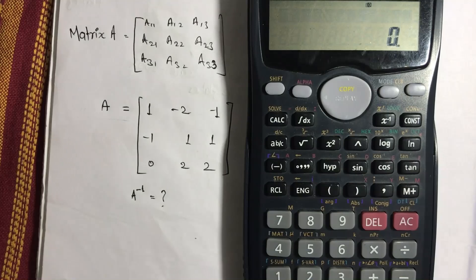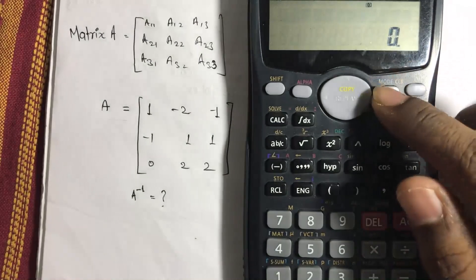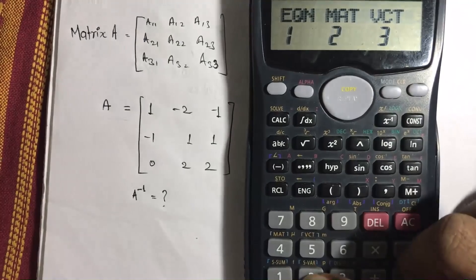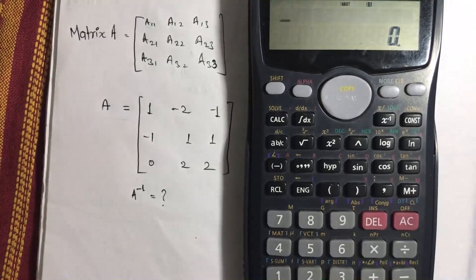So to do that, we have to go on mode and then change the mode into the matrix mode. So click on 2. Now here we are with our matrix mode.